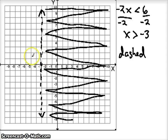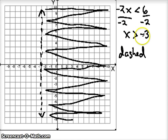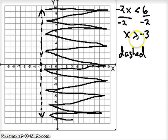Let's check if we shaded the right part. Negative 7 — is that greater than negative 3? No, so it shouldn't be shaded, and we didn't shade it. Negative 9 is not greater than negative 3, so that would be an untrue statement and it should not be shaded. Doing little test solutions always helps you check whether you shaded the right portion or not.